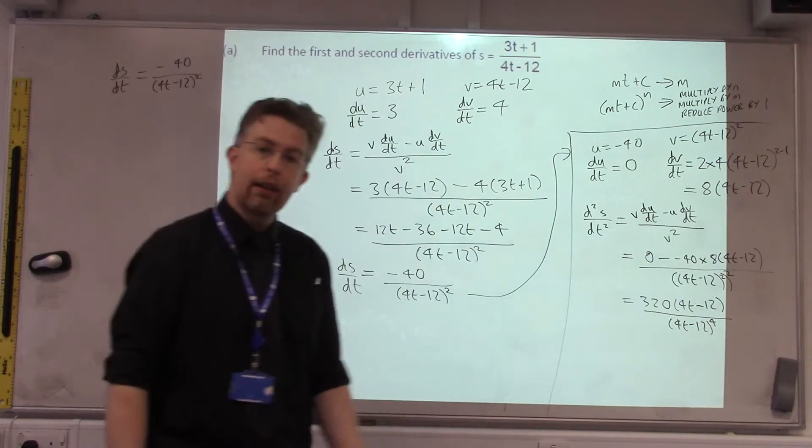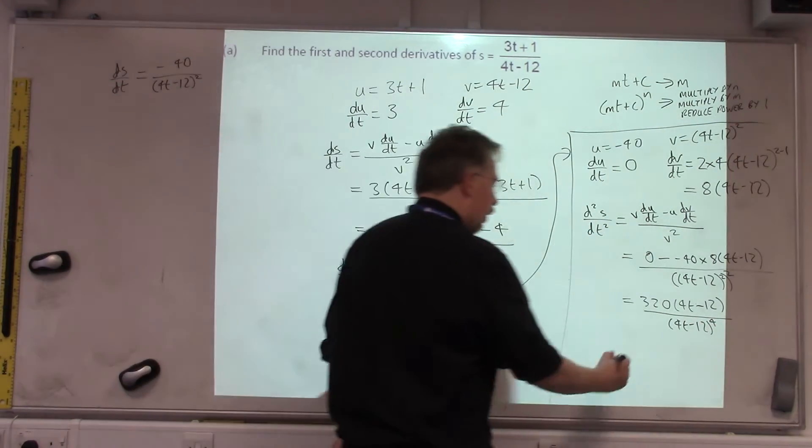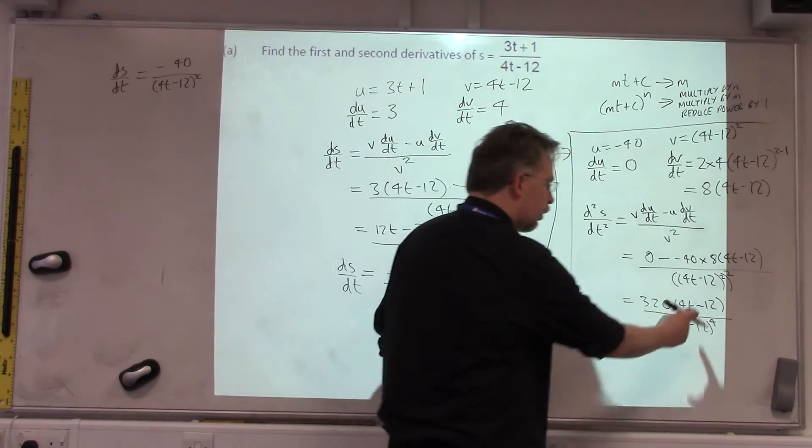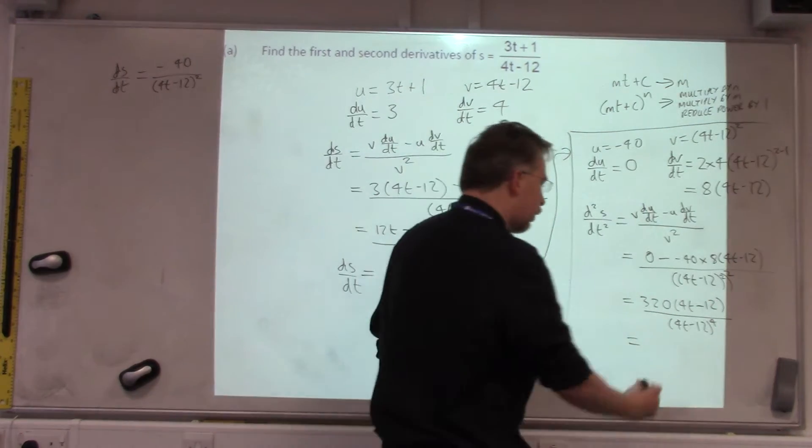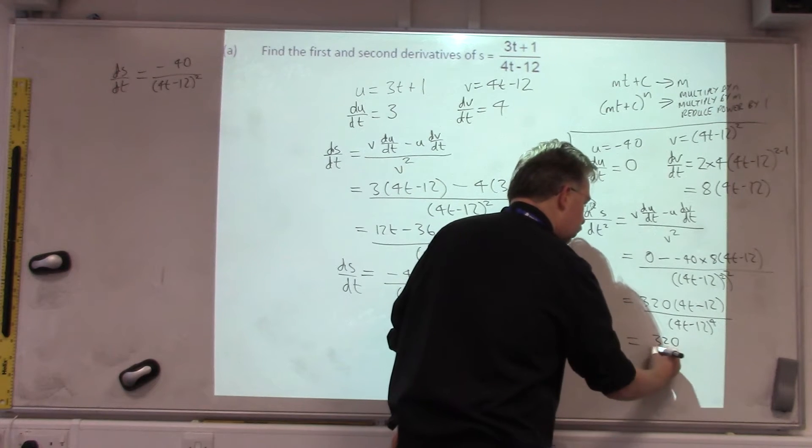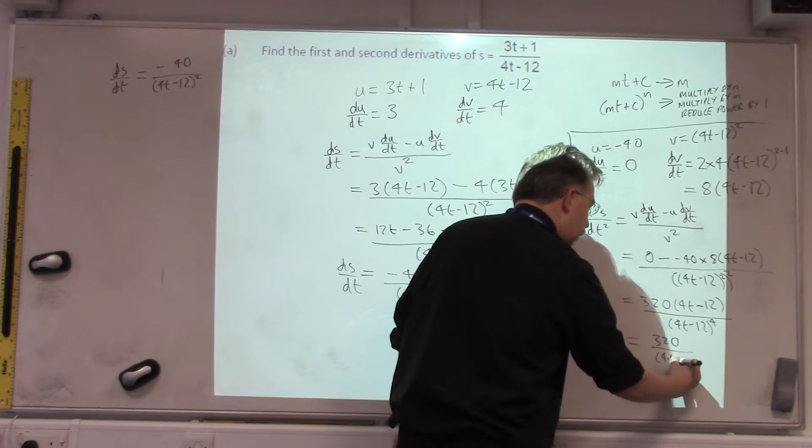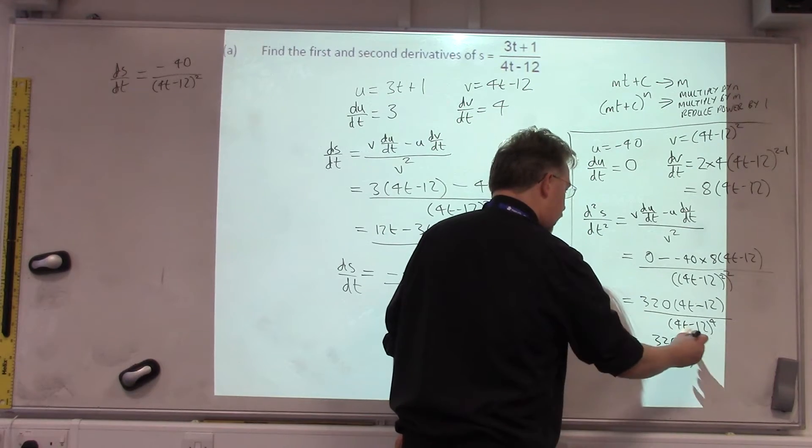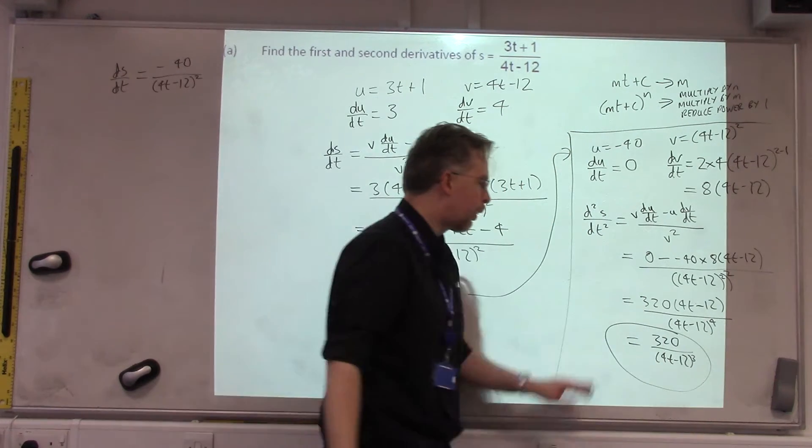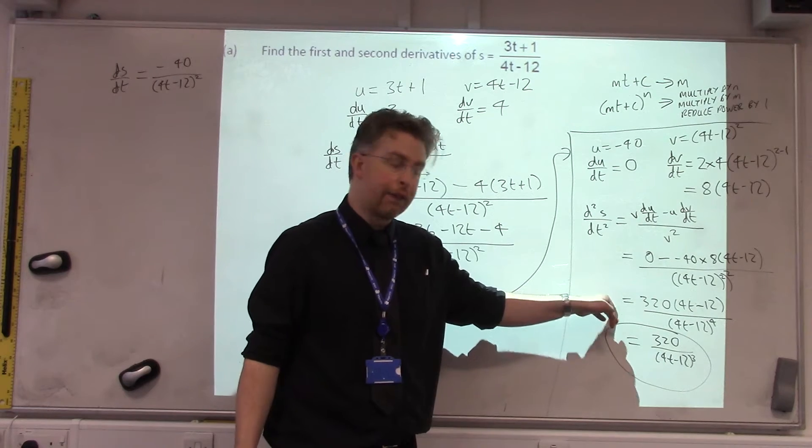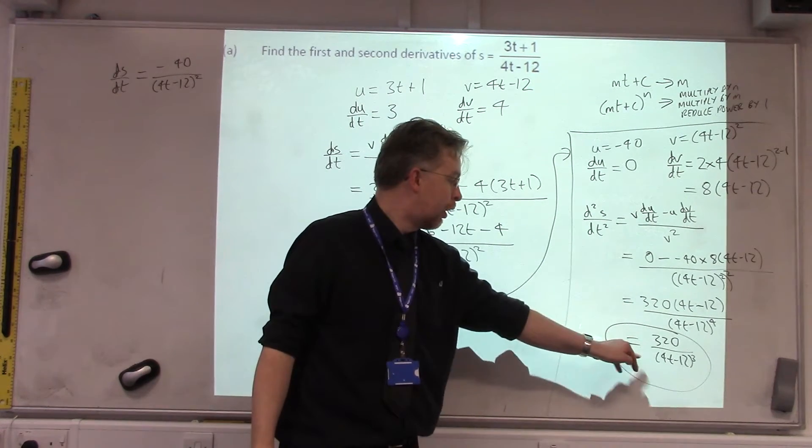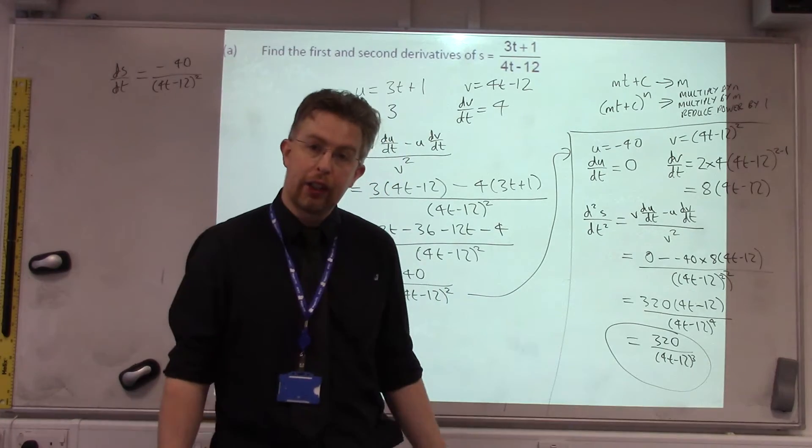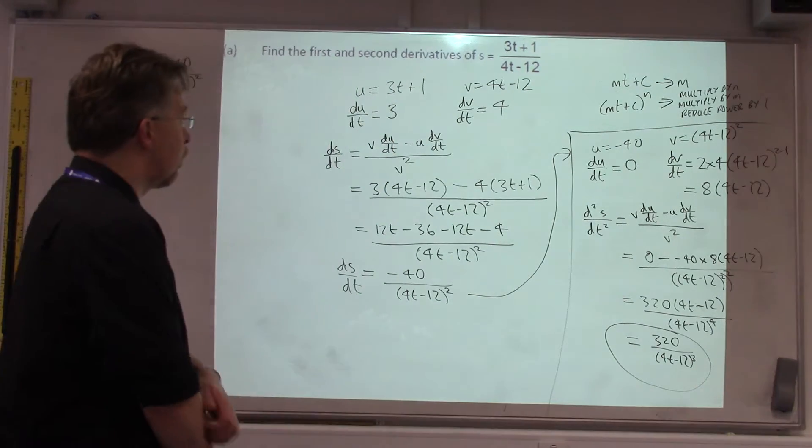Now, that may be accepted as a final answer, though some people may note that you can cancel that down, because you can divide both top and bottom by 4T minus 12, and you get 320 over 4T minus 12 cubed. So, when we put in that box, I'm happy enough you can get that far to give the mark, because it's simplified enough. That's just a bit more simplification, if you want to do that, that's fine, but it's up to you.